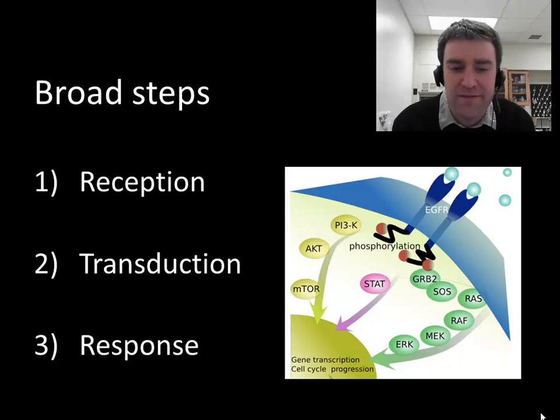So you can think of the broad steps here as being three. You have to receive the signal first. Then you have to convert that reception into some kind of cell activity. That's really what transduction means. We're just converting the fact that we've received the chemical signal into intracellular activity. And then ultimately that intracellular activity needs to lead to some kind of appropriate response. And we'll try and outline what cells might do in response to receiving signals.